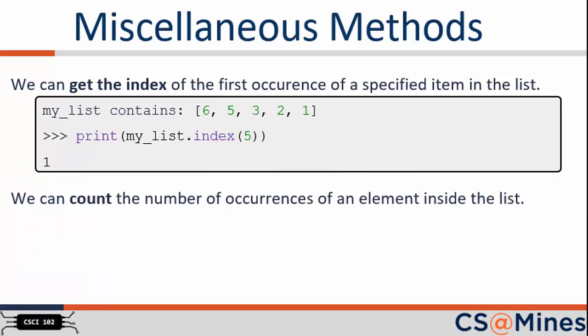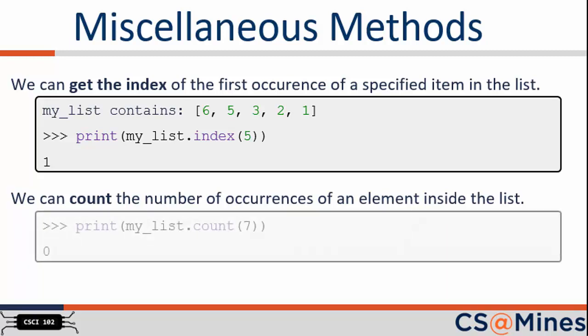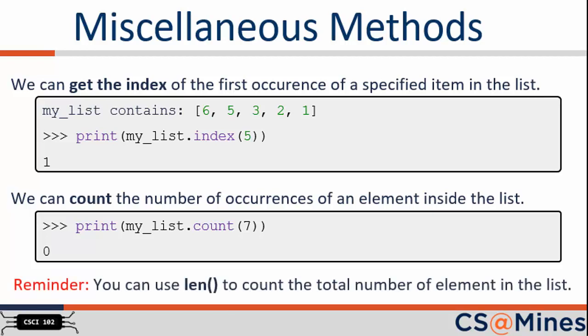Here are the last functions we will talk about with lists. The first is the index function, which will return the index of the first occurrence of a specified value in the list. So, for example, the value 5 in the list is at index 1. We can also count the number of occurrences of an element inside a given list with the count function. If the element does not exist in our list, it will return 0. As a reminder, if you need the total number of elements of a list, use the len function.